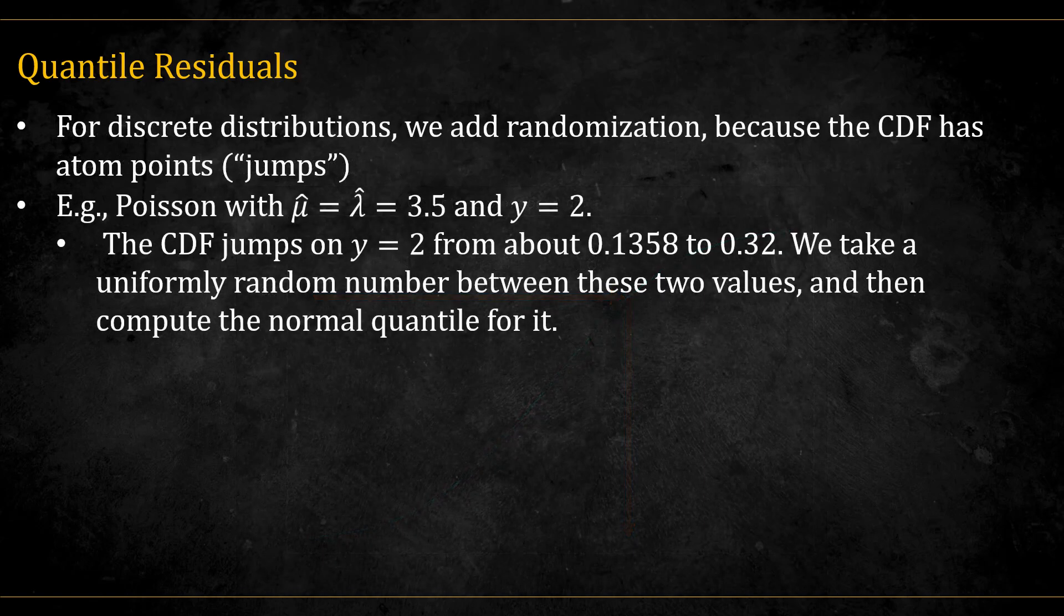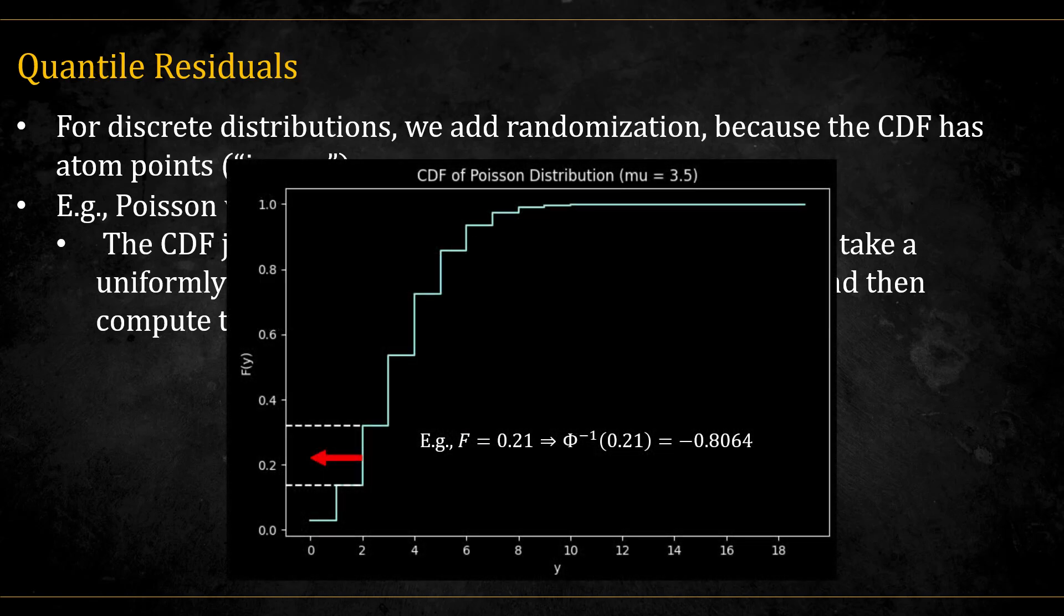For discrete distributions, we add randomization because the CDF has atom points, or places with jumps in the CDF. For example, Poisson with mu hat which is equal to 3.5, and y equal to 2. The CDF jumps on y equal to 2 from about 0.135 to 0.32. We take a uniformly random number between these two values, and then compute the normal quantile for it. Here is a graph showing the CDF. Suppose the random number we got is 0.21. Then we calculate the quantile for it, and it comes out to be this.